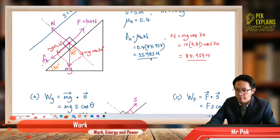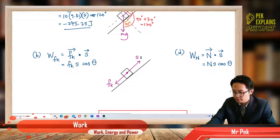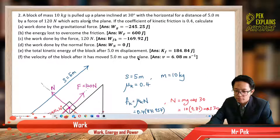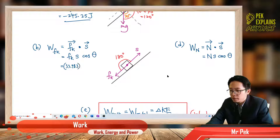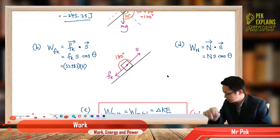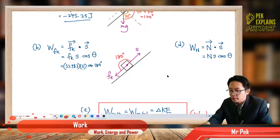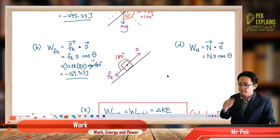Once we have the friction, we need to find angle theta between friction and displacement. Friction acts down the plane and displacement is up the plane, so the angle between them is 180 degrees. Substituting: 33.983 × 5 × cos 180°. Since cos 180° = −1, we get negative 169.915 joule. That is our work done due to friction.